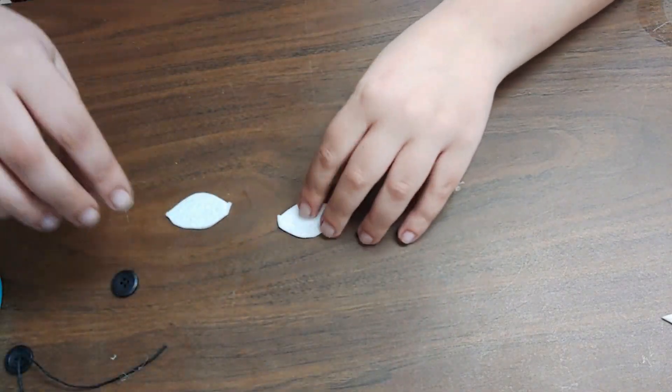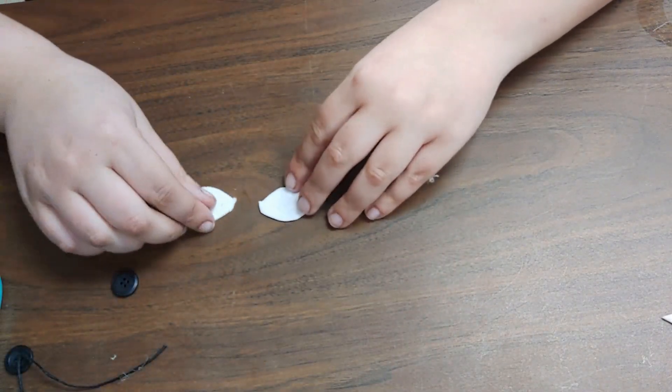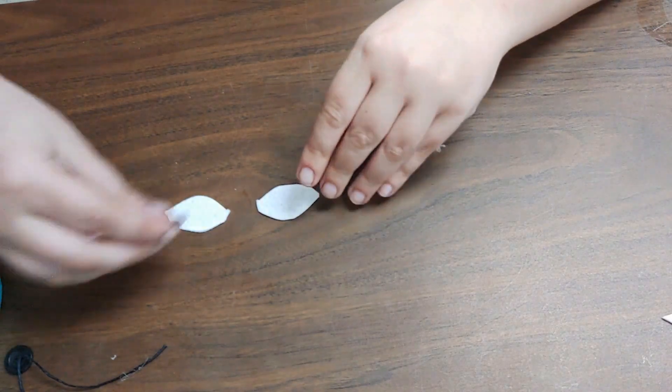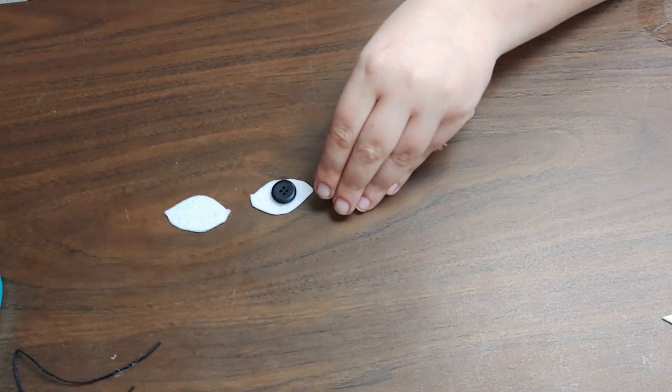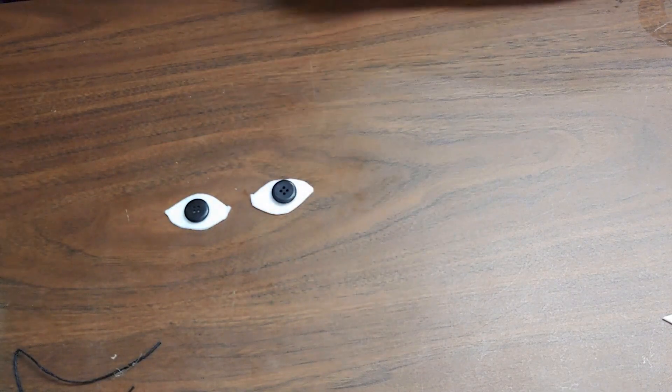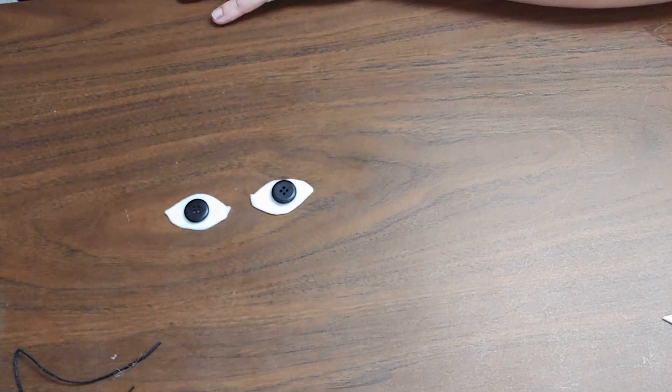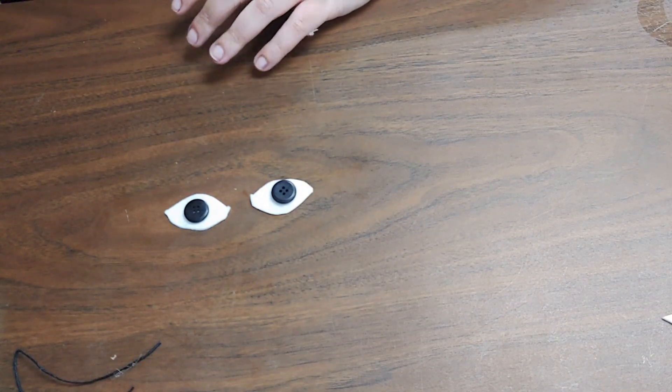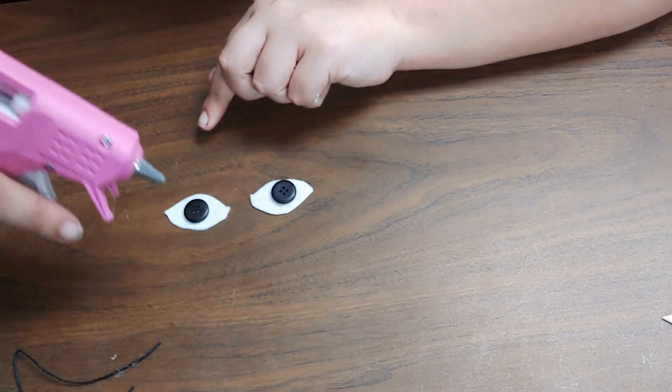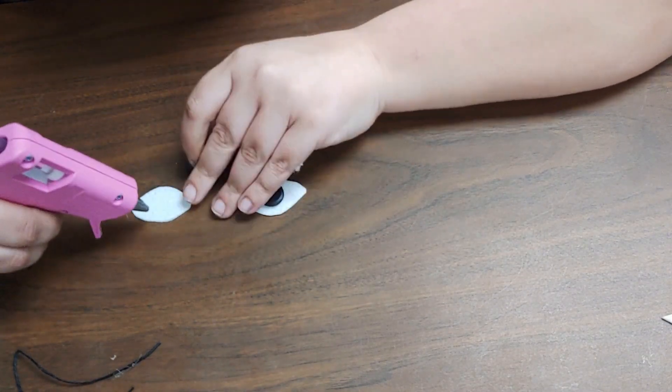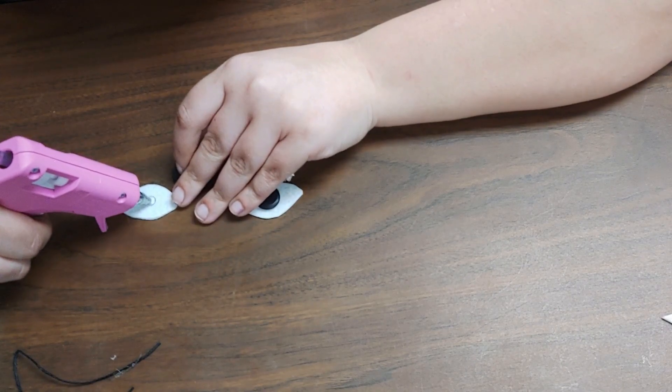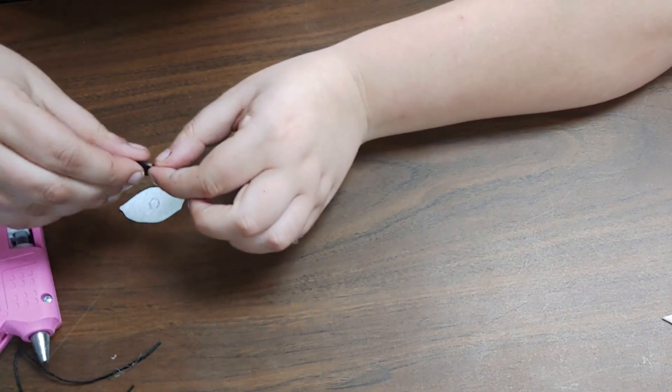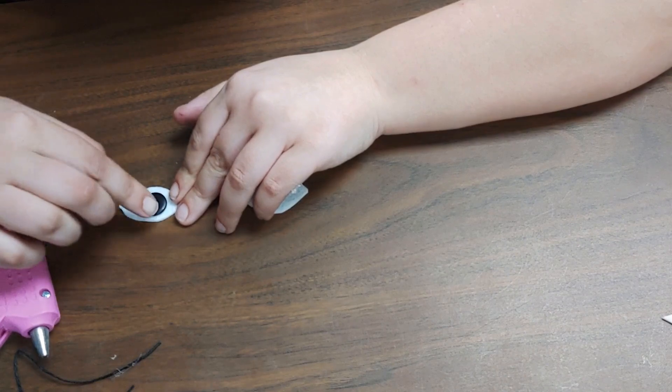The next thing I'm going to do is I'm going to glue the pupil buttons onto the eyes. This is just going to make our life easier when we go to connect the eyes. My hot glue gun does not want to reach. Just a little bit and push it on.